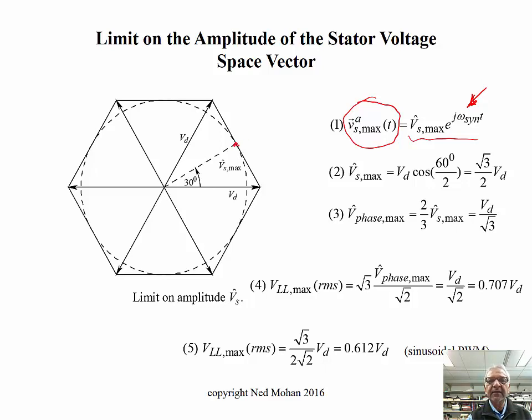So the limit occurs right here at 30 degrees from A axis over here. Because that's really the midpoint over here where the radius is the smallest at, compared to any other position of this desired space vector. So we can say that Vs max here is DC bus voltage times cosine of the 30 degrees, which is this value over here. So if that is the maximum that we can get for the space vector peak, and we know that the phase maximum peak is two-thirds of this here. So we get this value over here.